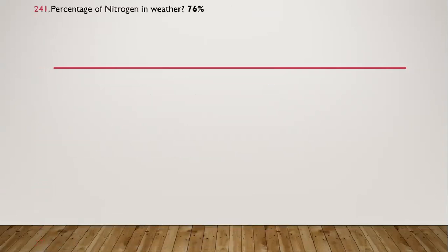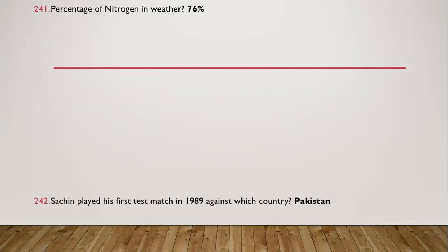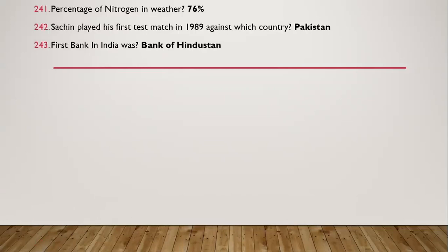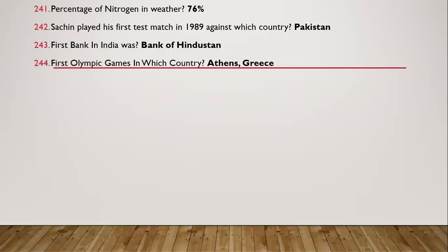Question 230: Percentage of nitrogen in air — 78 percent. Question 231: Sachin played his first test match in 1989 against Pakistan. Question 232: First bank in India was the Bank of Hindustan. Question 233: First Olympic Games in which country? Greece.